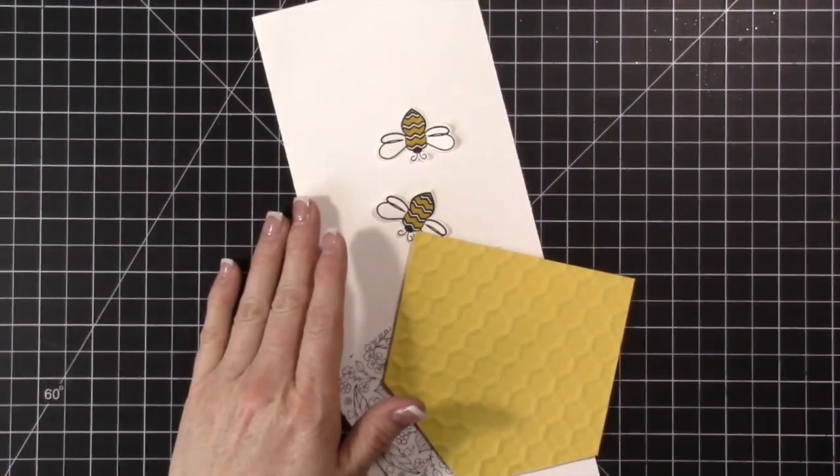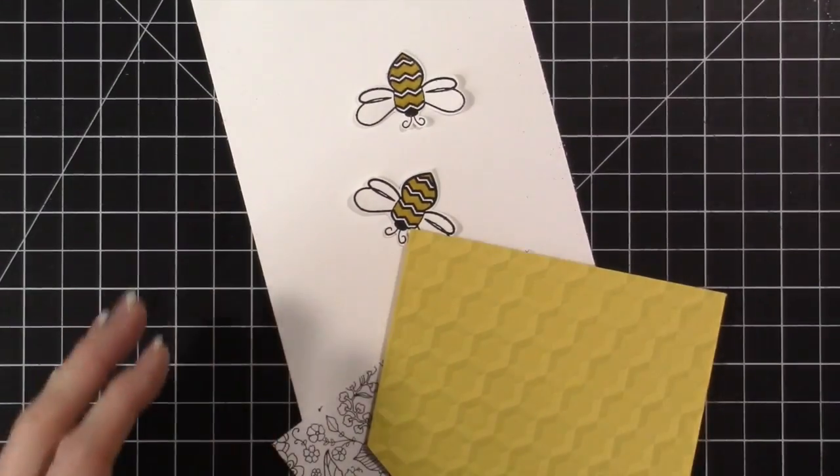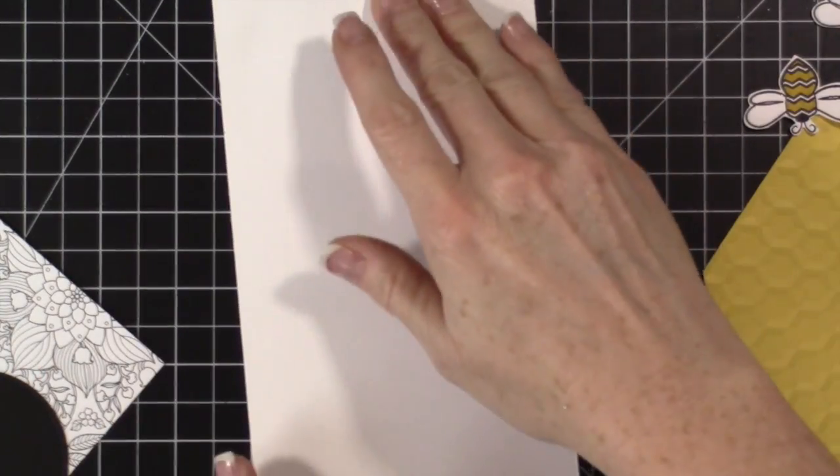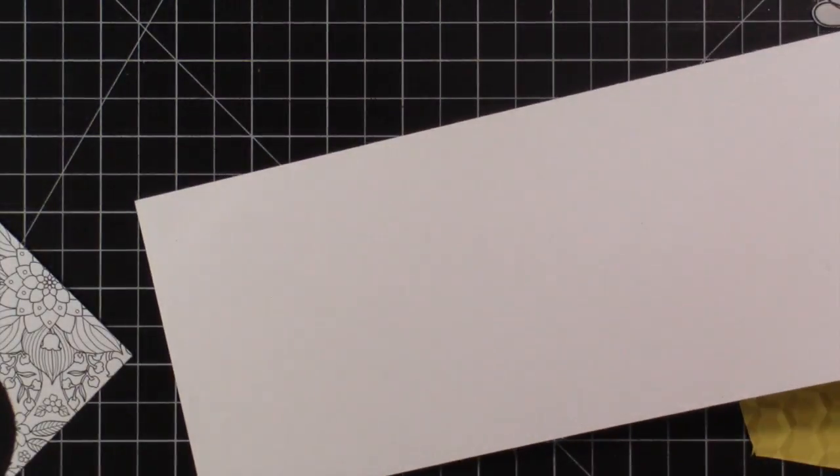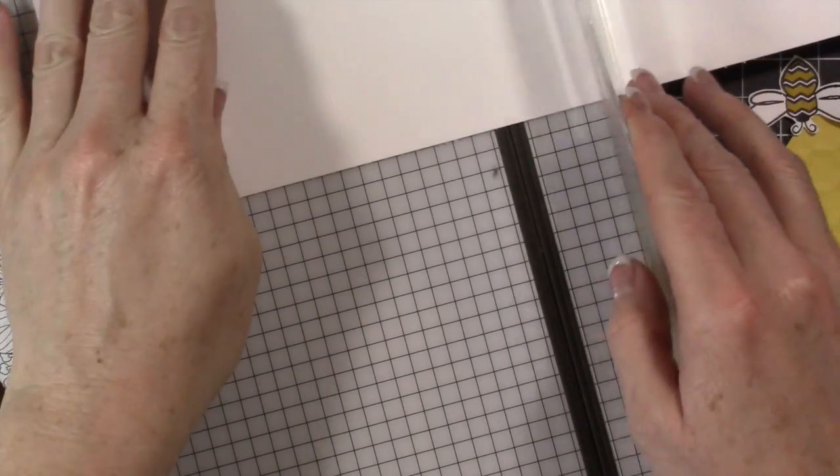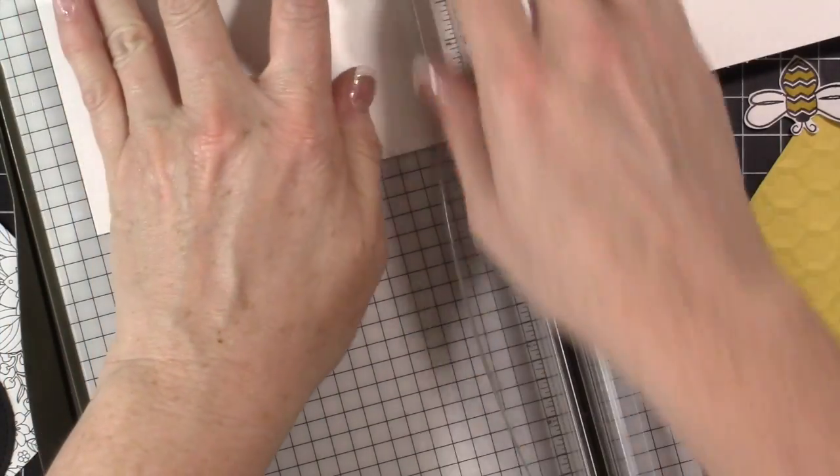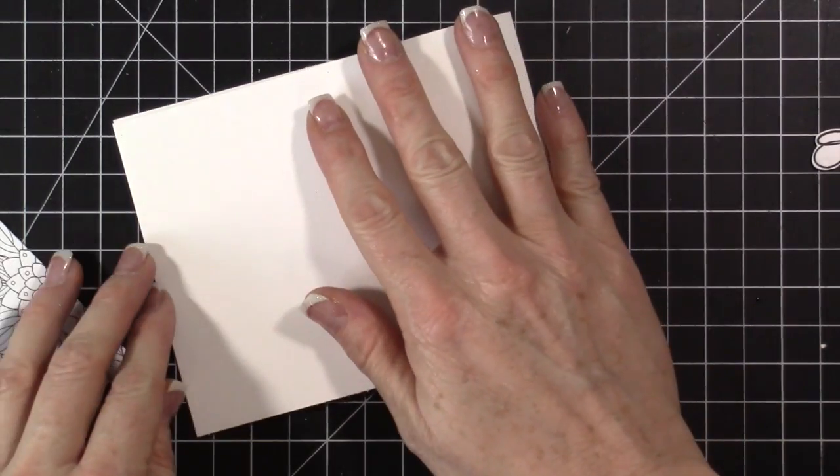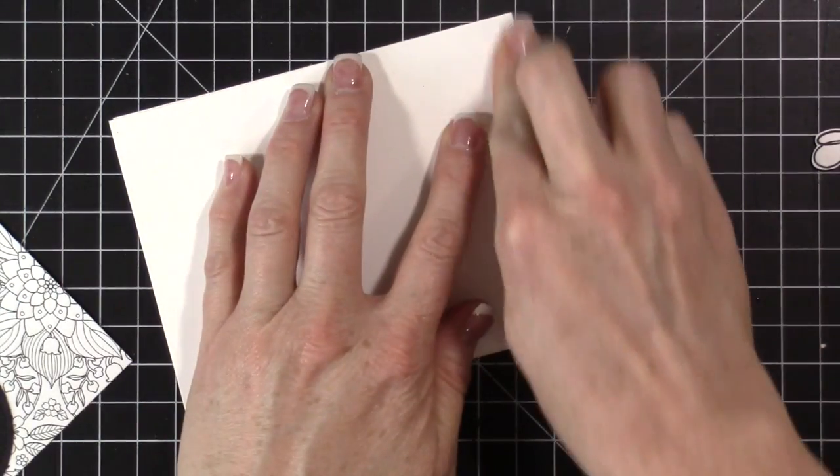Now I've done a ton of the work ahead of time because for one thing I want you guys to be able to hop to all of the other blogs and watch the videos and see the projects, and so I don't want you to be here forever. There's a lot of different steps. The first thing I'm doing is I'm starting with a piece of five and a half by four and a quarter thick whisper white cardstock. This is going to be my card base and then we're going to build our card on top of this.